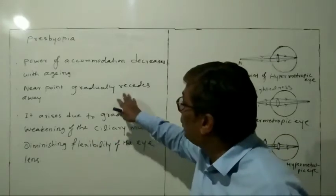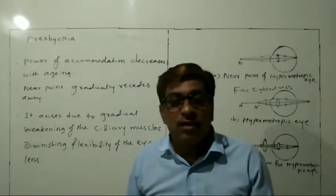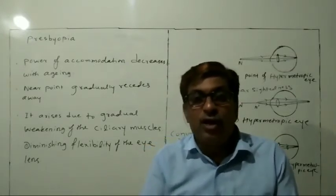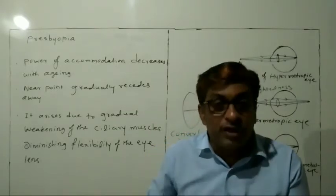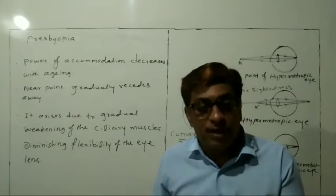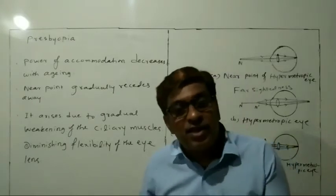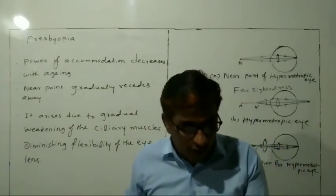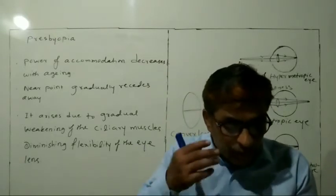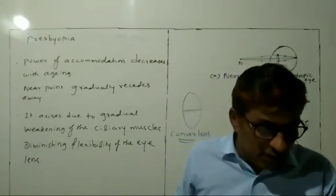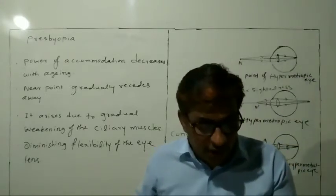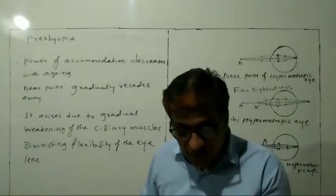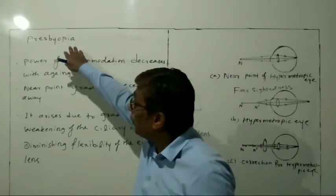For most people, the near point gradually recedes further. The person can't read up close easily; they have to hold reading material very far. They find it difficult to see nearby objects comfortably and distinctly without corrective eyeglasses. This defect is called presbyopia.